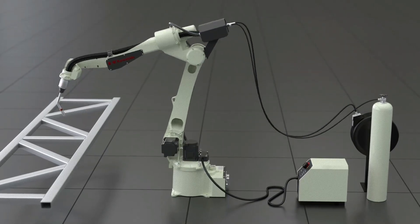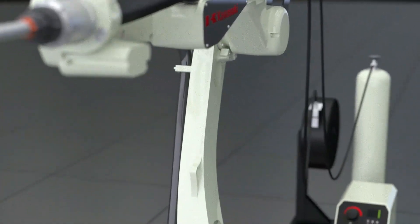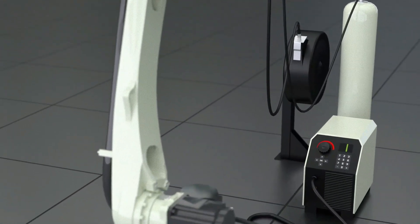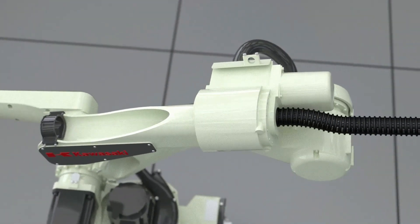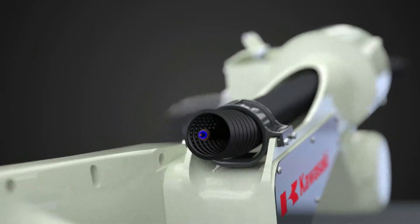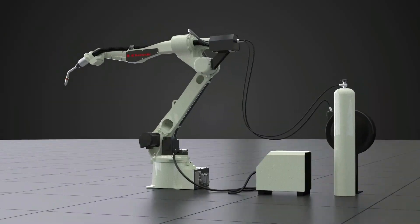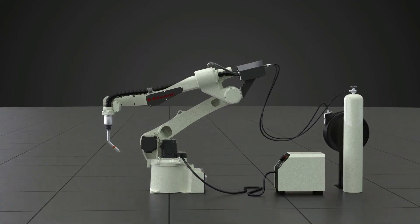The BA-6L has been designed to work smoothly with a number of industry-leading welding equipment. Its hollow-wrist design allows for easy management of cables and hoses around the torch, providing stable wire feeding and reliable offline teaching.